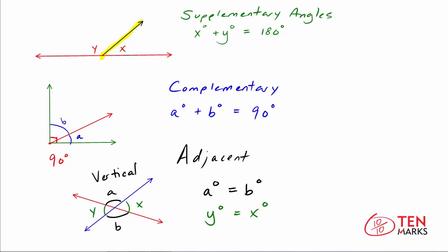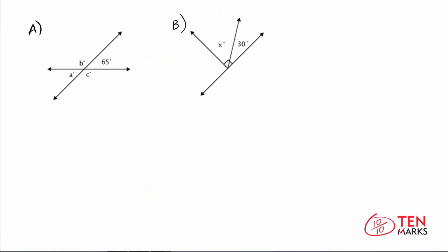Let's use the information I've just shown you to solve some problems involving missing angle measurements. We have two different diagrams, A and B, and we want to find the measure of the missing angles. Let's start with A. An angle labeled 65 degrees is shown, and we have to find all the measurements for the other three angles. I notice there are two lines intersecting, so I'm automatically going to be thinking vertical angles. The opposite angle to 65 is angle A over here. Since vertical angles are equal to one another, the measure of angle A equals 65 degrees.